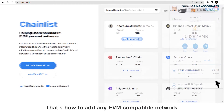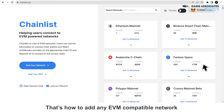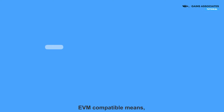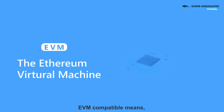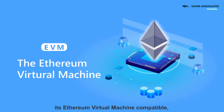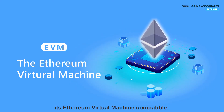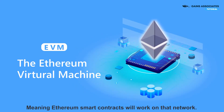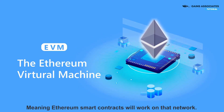That's how to add any EVM compatible network to your MetaMask. EVM compatible means it's Ethereum Virtual Machine compatible, meaning Ethereum smart contracts will work on that network.